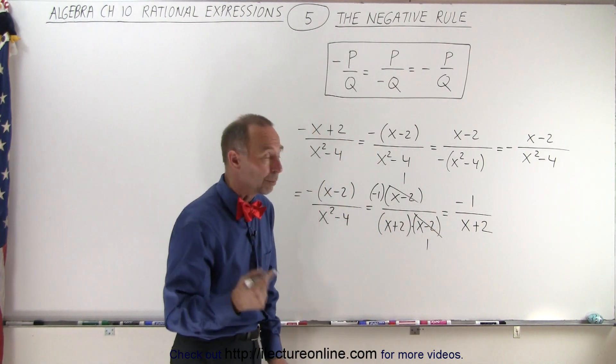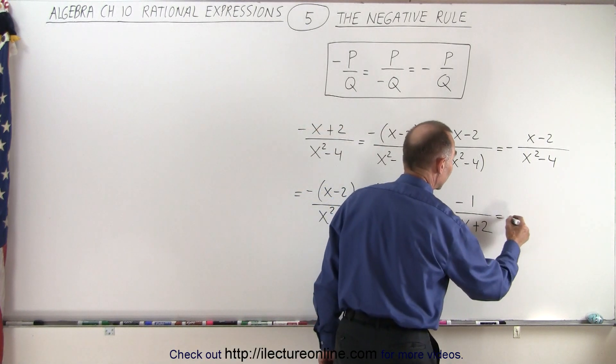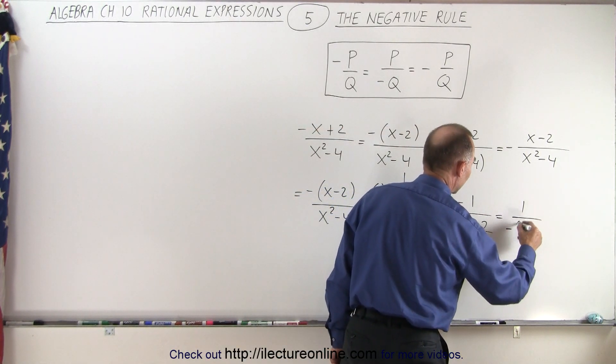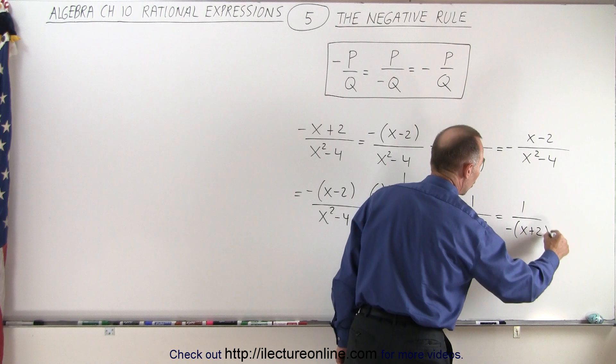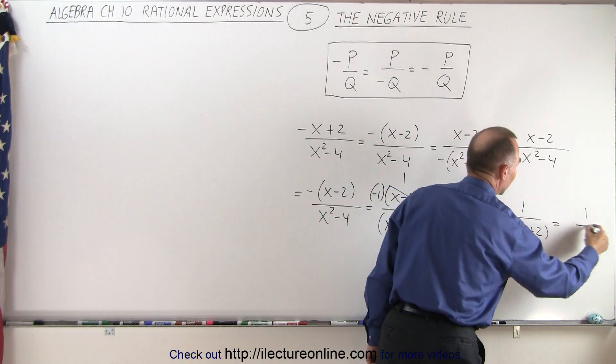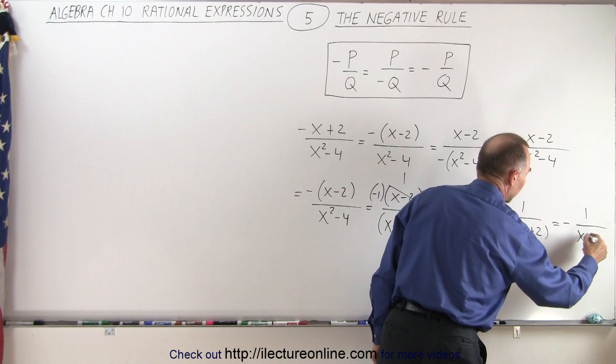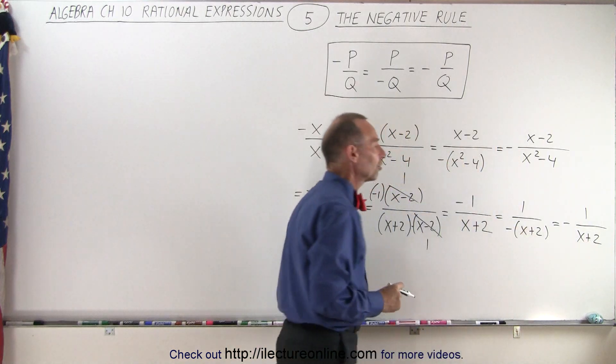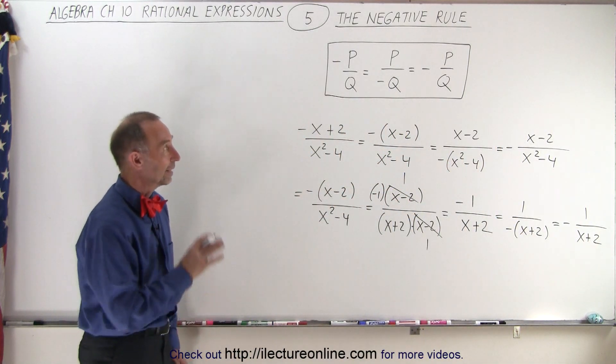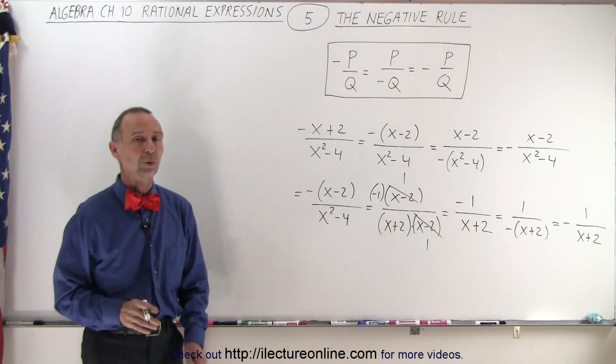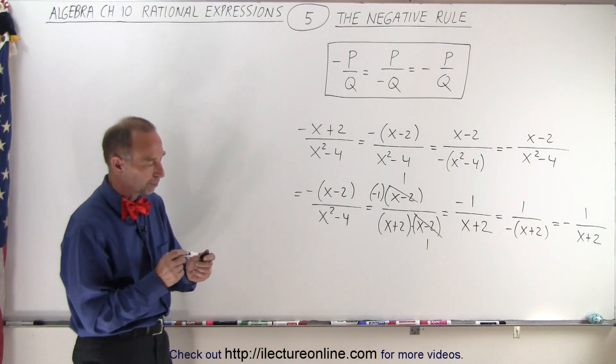And again, it doesn't matter where we put that negative sign. We can write this as 1 over negative times x plus 2. Or we can simply write it in front, like this. And again, those answers are identical in all respects. And that's what we mean by the negative rule in rational expressions.